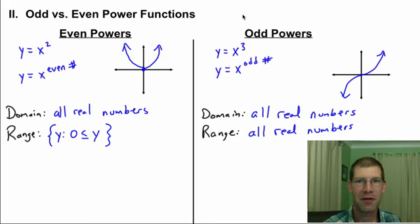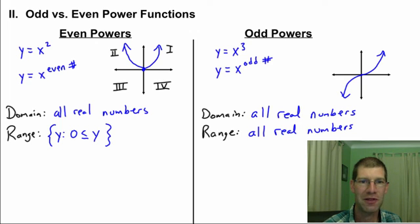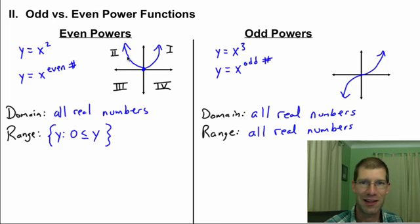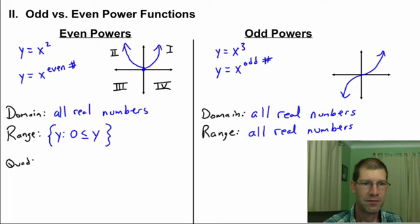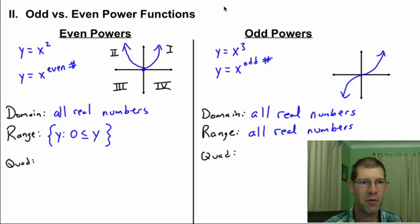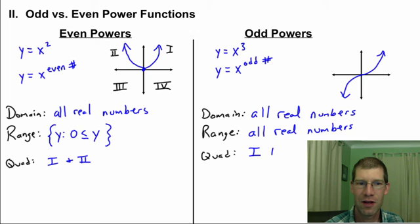The last thing: what quadrants are these functions in? Quadrants are labeled one, two, three, four. For even power functions, the graph is above the x-axis, so it sits in quadrants one and two. For odd power functions, we have quadrants one and three. That's all there is in section one.